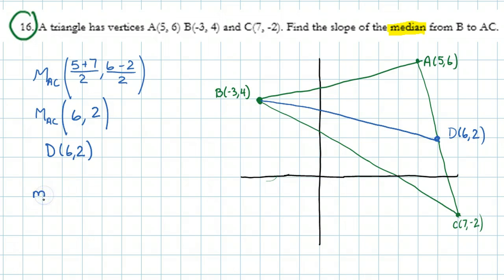the slope of BD is equal to, and the slope is rise over run. So 2 minus 4 over 6 minus negative 3. Watch that double negative. So 2 minus 4 is negative 2. 6 minus negative 3 is 9. So therefore, the slope is negative 2 over 9. So before I say I'm good, let's ask myself, does this make sense?